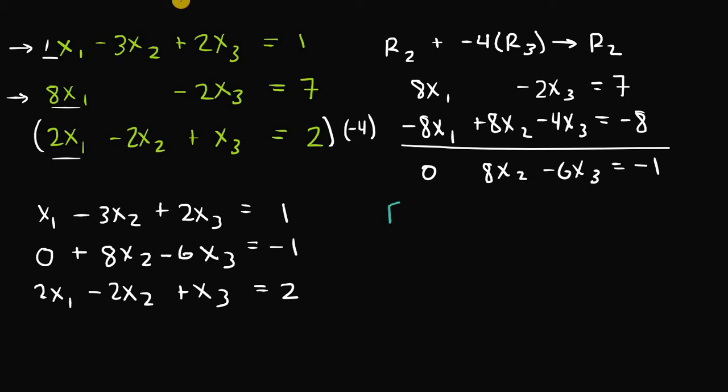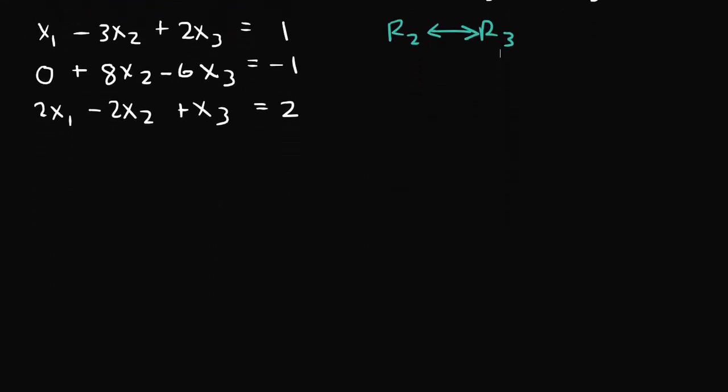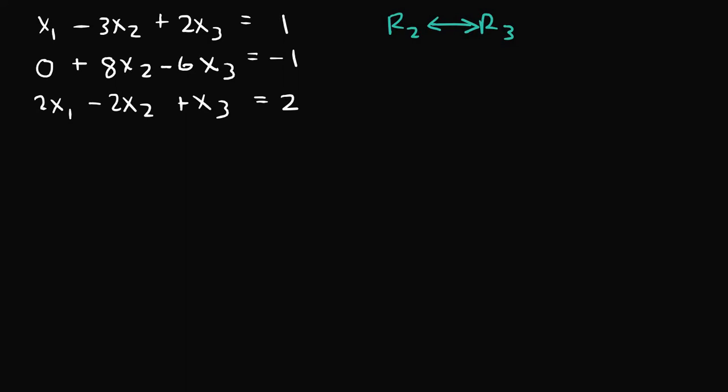And the next thing I can do is actually take row 2 and I can swap it with row 3. So if I scroll down here and I rewrite the system, our new equivalent system would be x1 minus 3x2 plus 2x3 is equal to 1. 2x1 minus 2x2 plus x3 is equal to 2. And finally, 8x2 minus 6x3 is equal to negative 1.